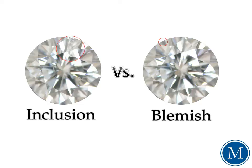Either way, inclusions usually cannot be removed. Things such as air bubbles, cracks, and traces of non-diamond minerals are a couple of examples. A blemish, on the other hand, is found on the surface of the diamond and is easier to remove than an inclusion. Blemishes can include scratches, pits, and chips, most of which occur during the cutting process.